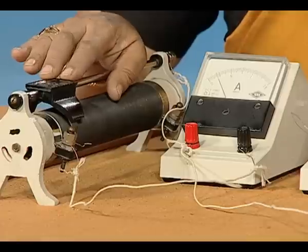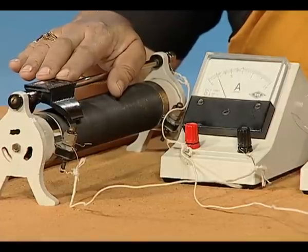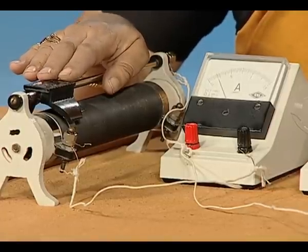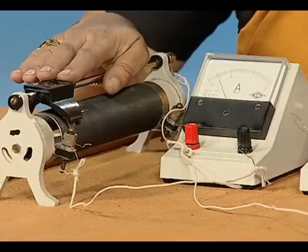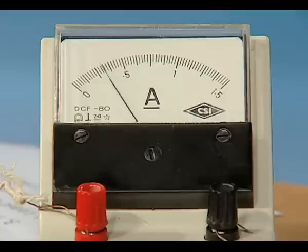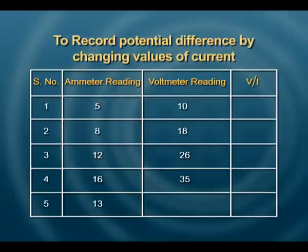We take one more reading. We need a minimum of 5 readings because we plan to plot a graph, and a graph should show variation between two physical quantities with at least 5 data points. Going beyond that is also pointless as the variation will remain the same. This final ammeter reading is 13 divisions and the voltmeter reading is 28 divisions.